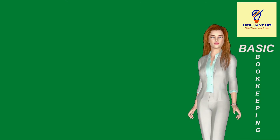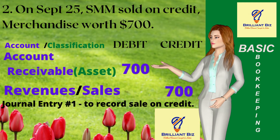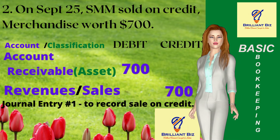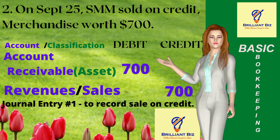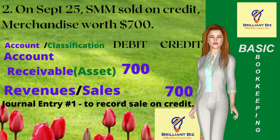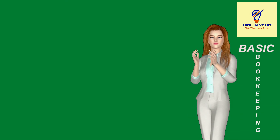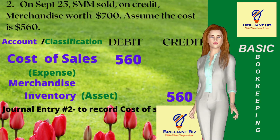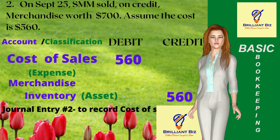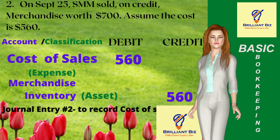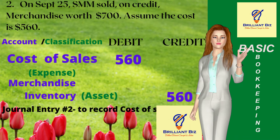Transaction 2: On September 25, SMM sold on credit merchandise worth $700 in total. The entry is debit accounts receivable of $700 for the selling price, which is receivable from the customers, and credit sales revenues of $700. The second entry records the cost of merchandise sold on credit — assume total cost is $560 — debit cost of sales for $560 and credit merchandise inventory for $560 to decrease the merchandise inventory.